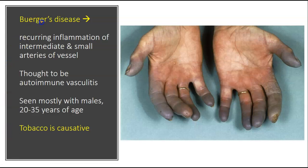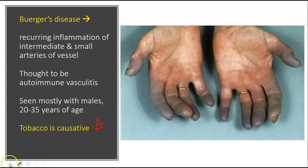Another arterial condition is Buerger's disease. It's a recurring inflammation of the intermediate and small arteries of the vessels, particularly seen in the hands. It's thought to be a type of autoimmune vasculitis, usually seen in males ages 20 to 35. Tobacco is thought to be the causative agent.